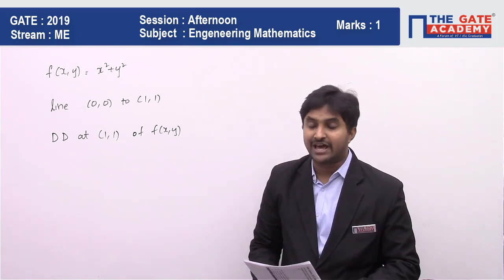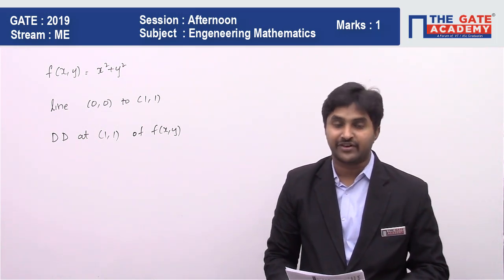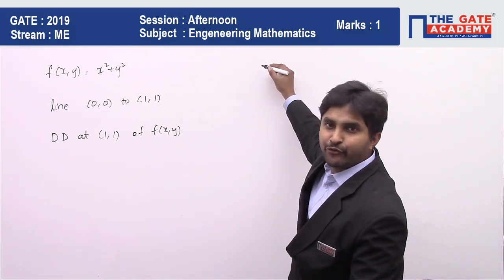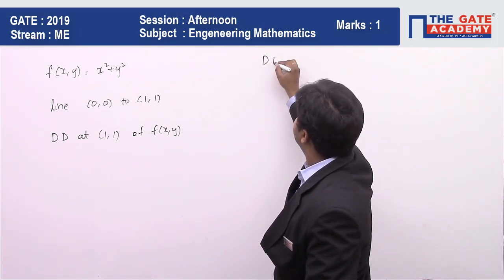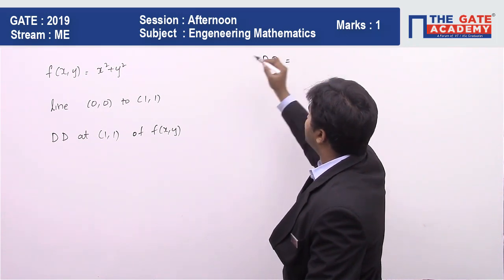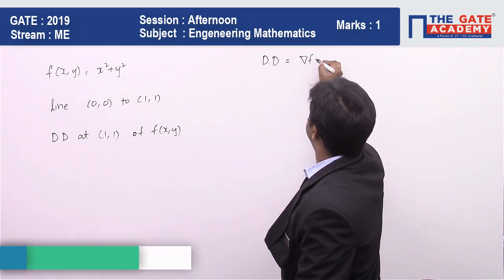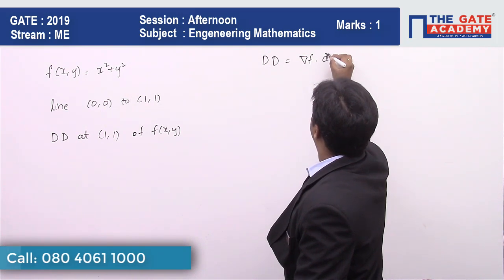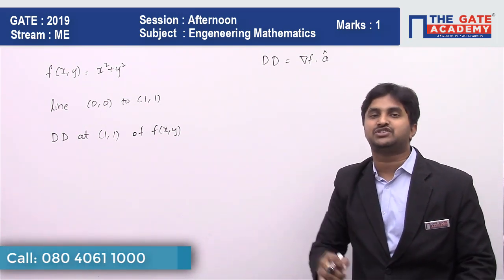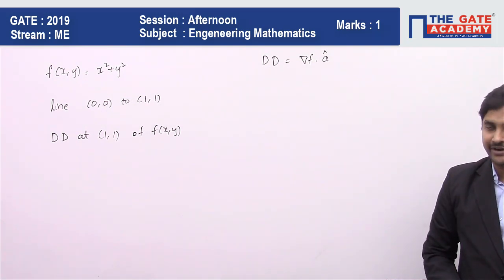So we want the directional derivative of the function f(x,y). Whenever we want the directional derivative, it is equal to the gradient of the function dot the unit vector in whose direction we want the directional derivative.